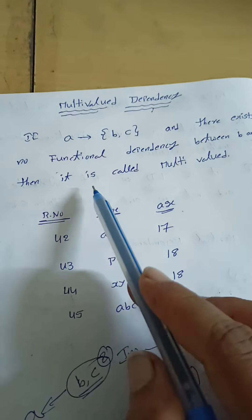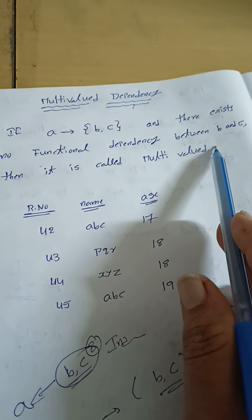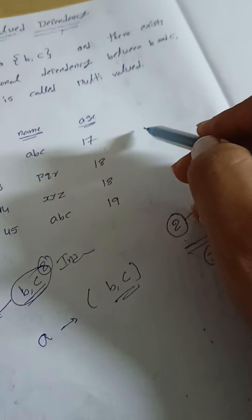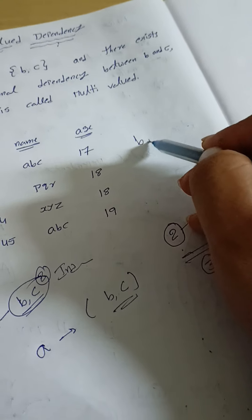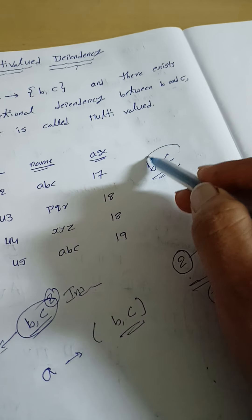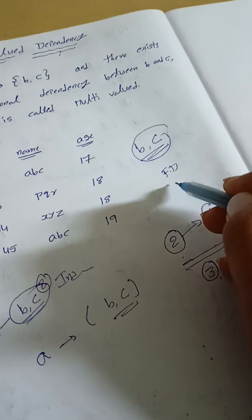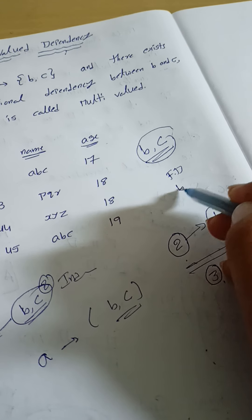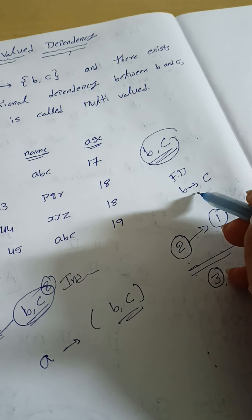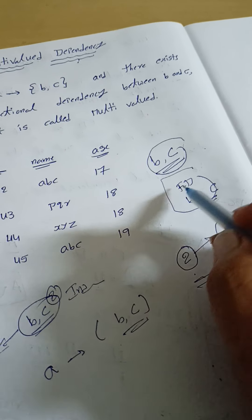There exists no functional dependency between B and C. B and C have no functional dependency. What is the meaning of functional dependency? With the help of one attribute we will identify the other attribute — that is functional dependency.